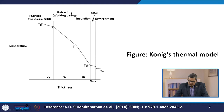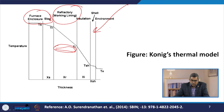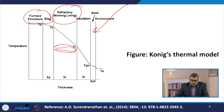If heat flux into the refractory surface exceeds the heat flux out of the shell, the interface temperature must increase, causing increased corrosion rate until the heat balance is maintained. The rapid corrosion of the refractory is expected until a dynamic equilibrium is achieved. This figure reflects Koenig's thermal model, showing the furnace enclosure, slag, refractory working line, shell insulation, and opening environment.